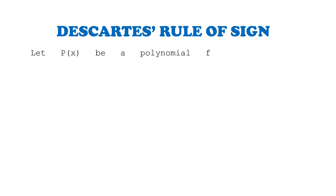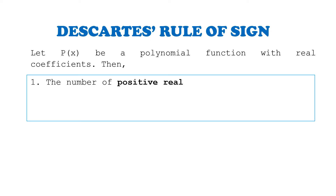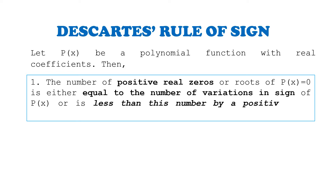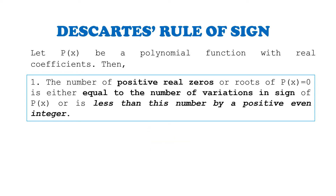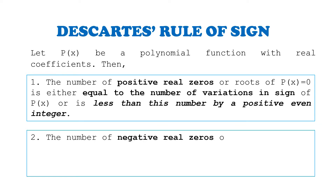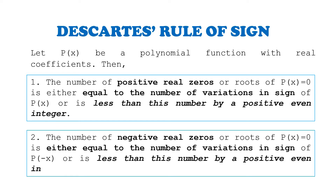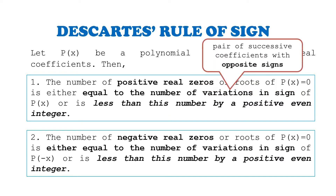The rule of signs is helpful in finding the positive and negative roots of equations. Descartes' Rule of Signs states that if P(x) is a polynomial function with real coefficients, then the number of positive real zeros of P(x) = 0 is either equal to the number of variations in sign of P(x), or is less than this number by a positive even integer. Similarly, the number of negative real zeros is either equal to the number of variations in sign of P(−x), or less than that number by a positive even integer.